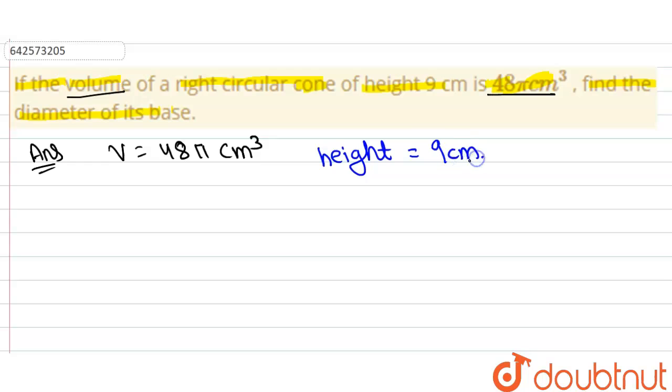Then we have to find out its diameter. So the formula for volume of cone is equals to 1/3 πr²h, one by three pi r square h.